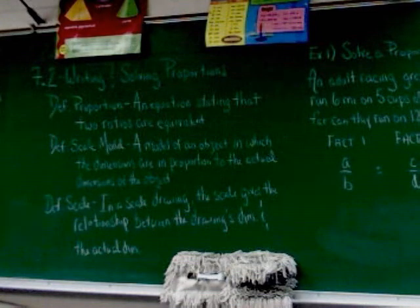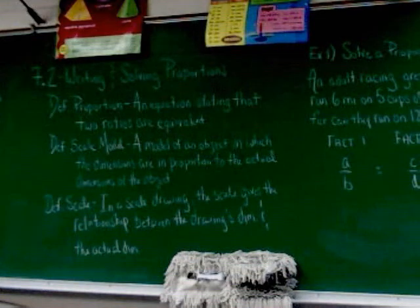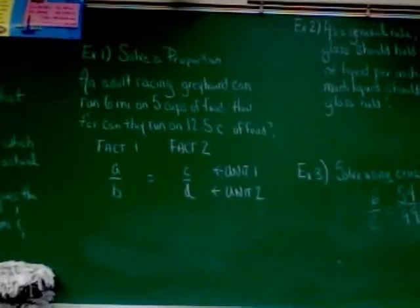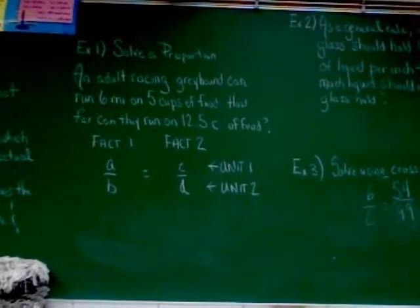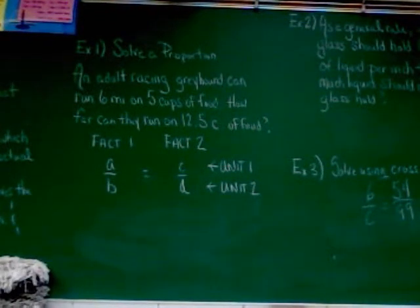Example one, solving a proportion. We'll solve the proportions both ways using scale and cross products, but we're going to start with scale. An adult racing greyhound can run six miles on five cups of food. How far can they run on 12 and a half cups of food?